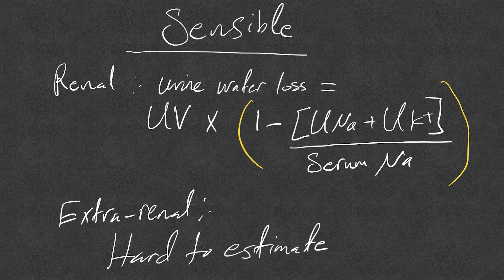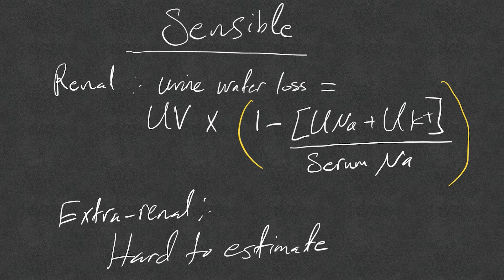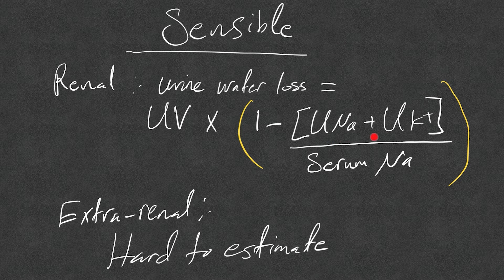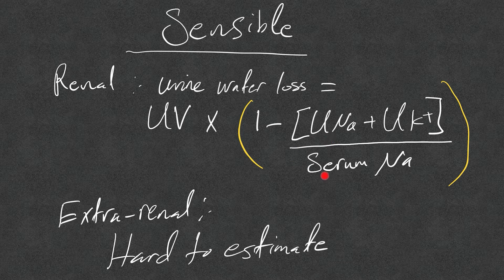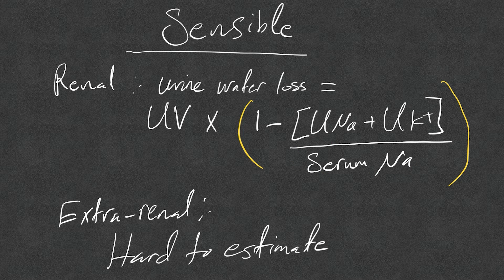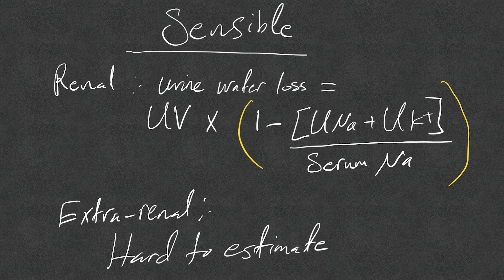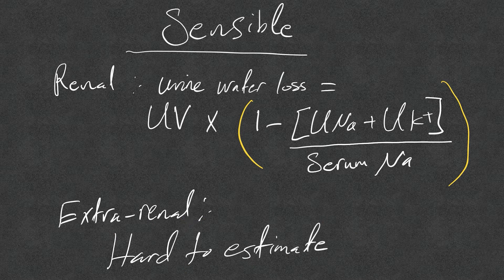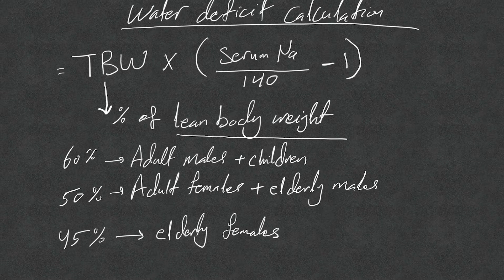Sensible renal water losses can be measured if you want to using this equation, which again is a rough estimate: urine volume multiplied by one minus the sum of urine sodium plus urine potassium divided by serum sodium. You don't need to memorize it, you can look it up, but again you need to order urine sodium and urine potassium and you need to measure the urine volume. Extra-renal is very hard to estimate the water losses in diarrhea.